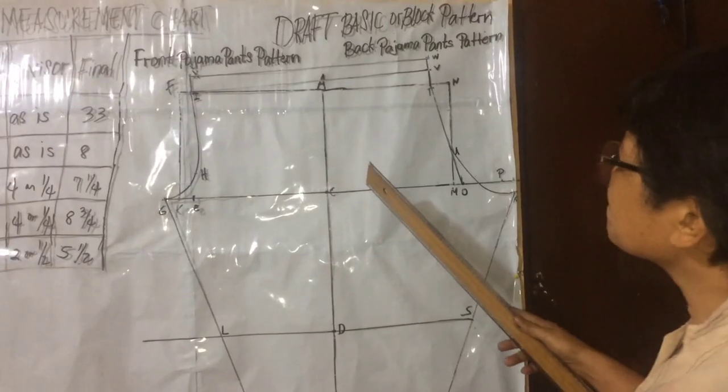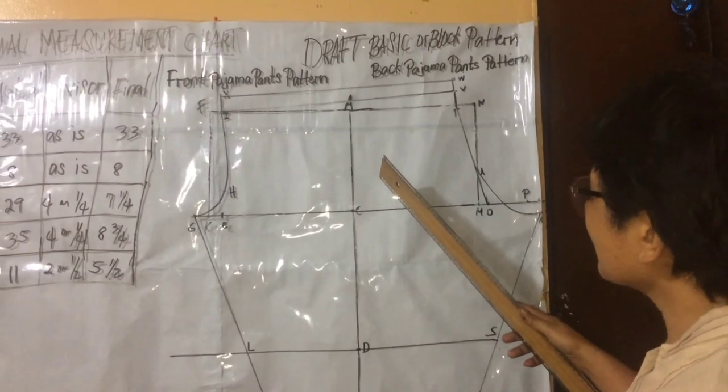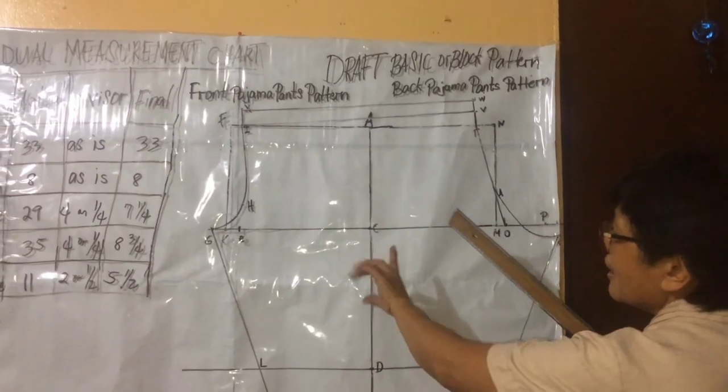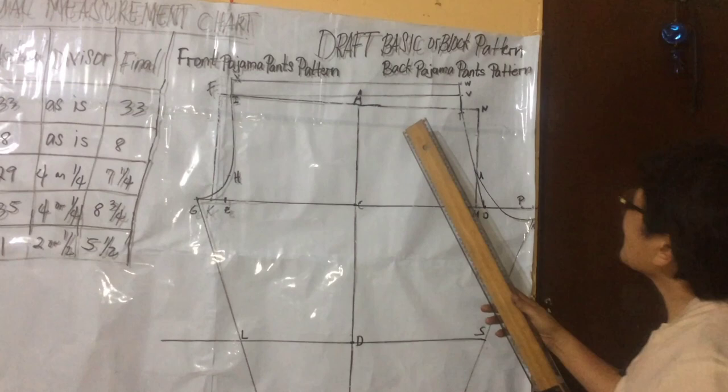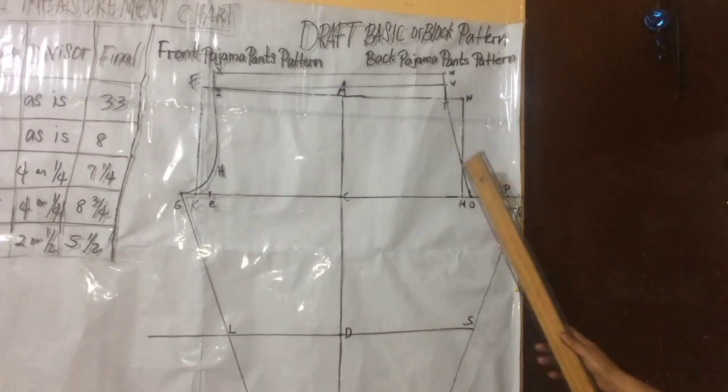The front part pajama pants pattern is to the left and the back pajama pants pattern is to the right.